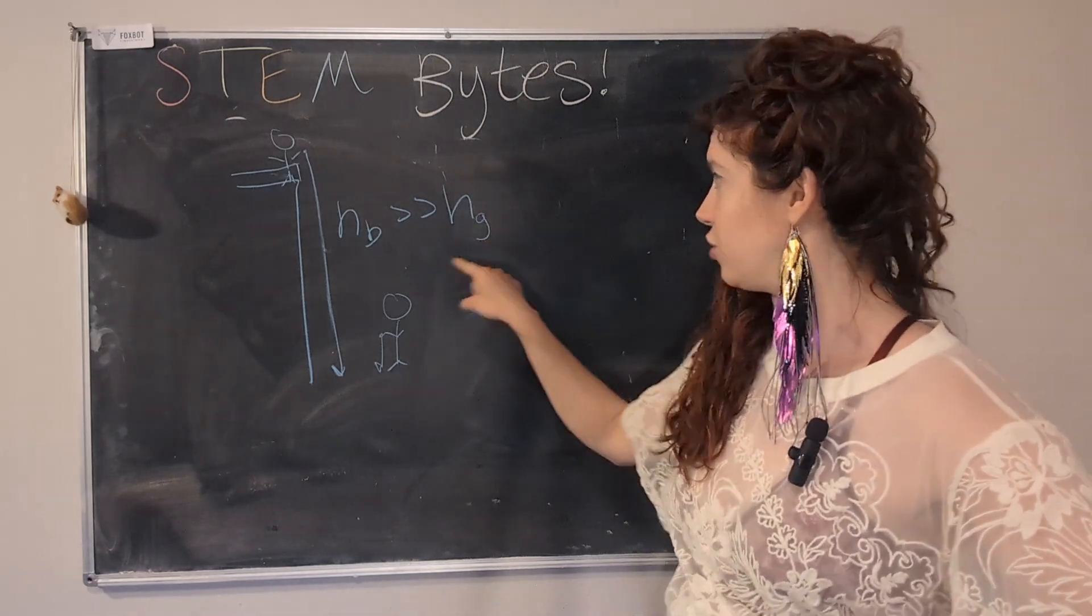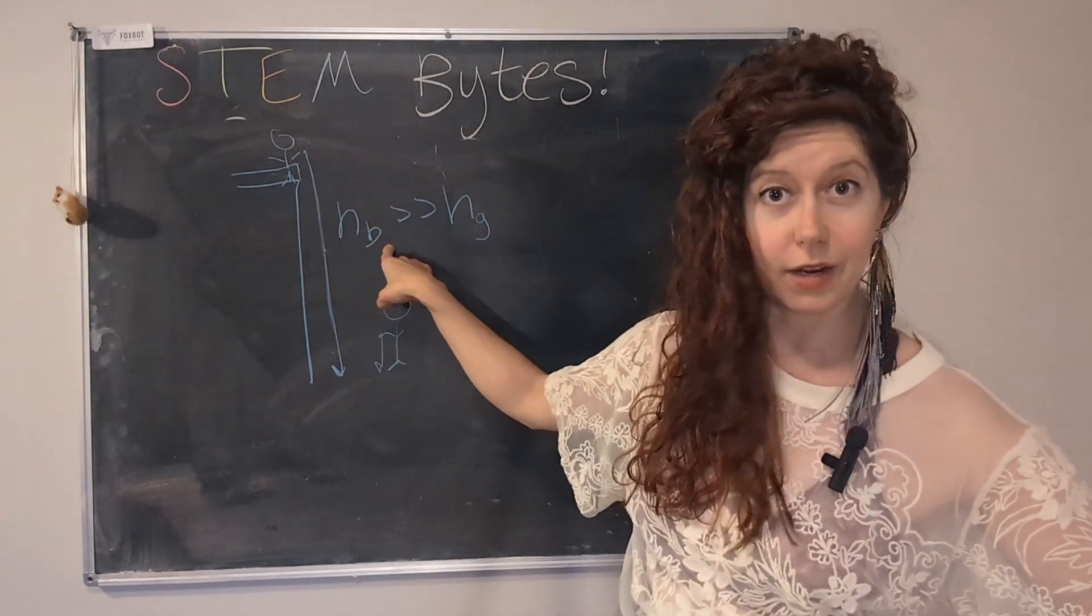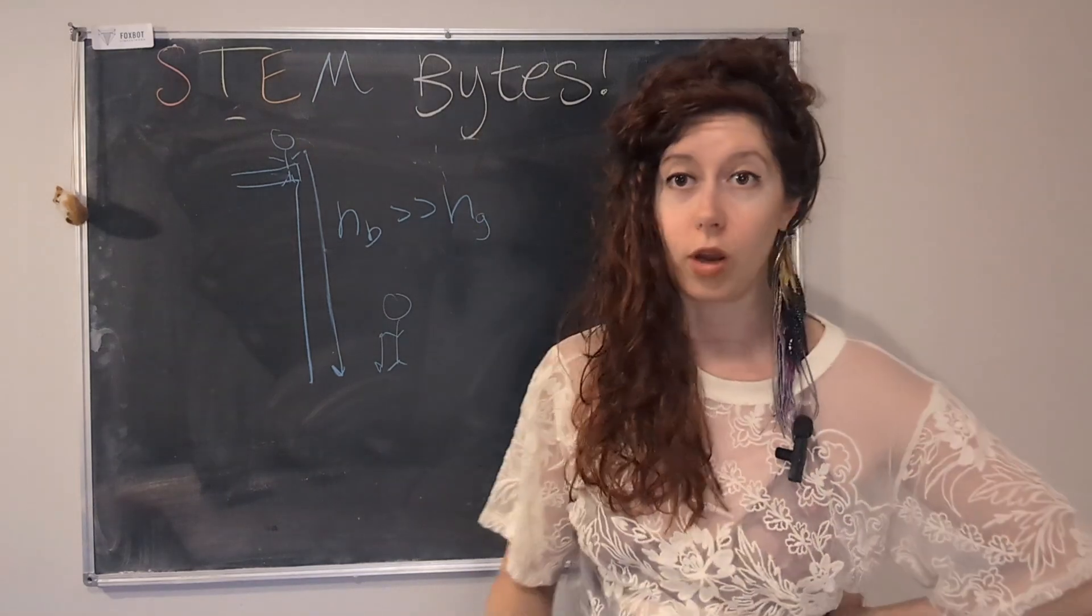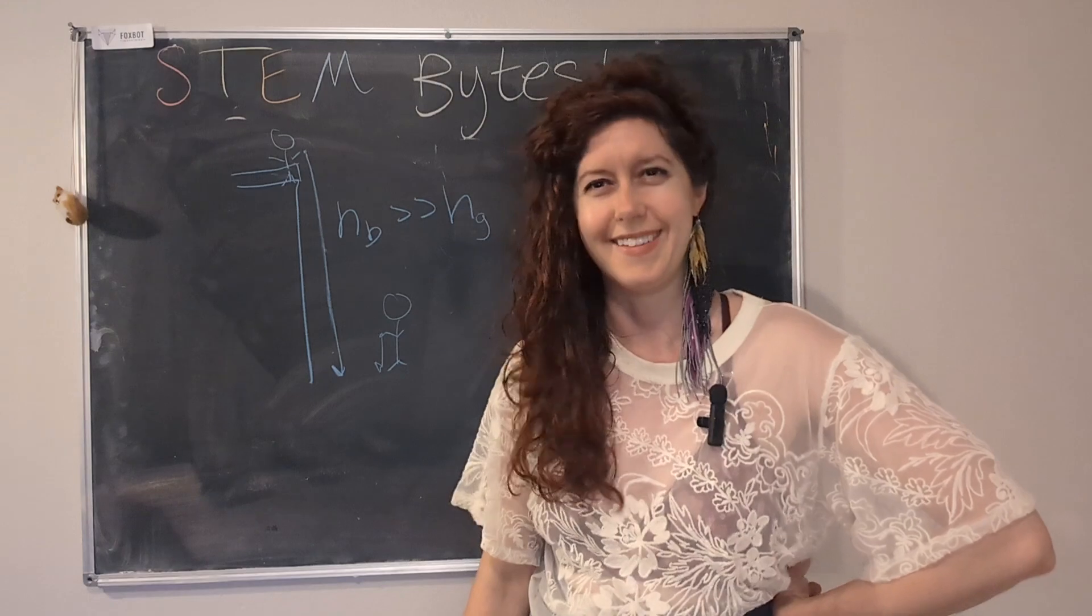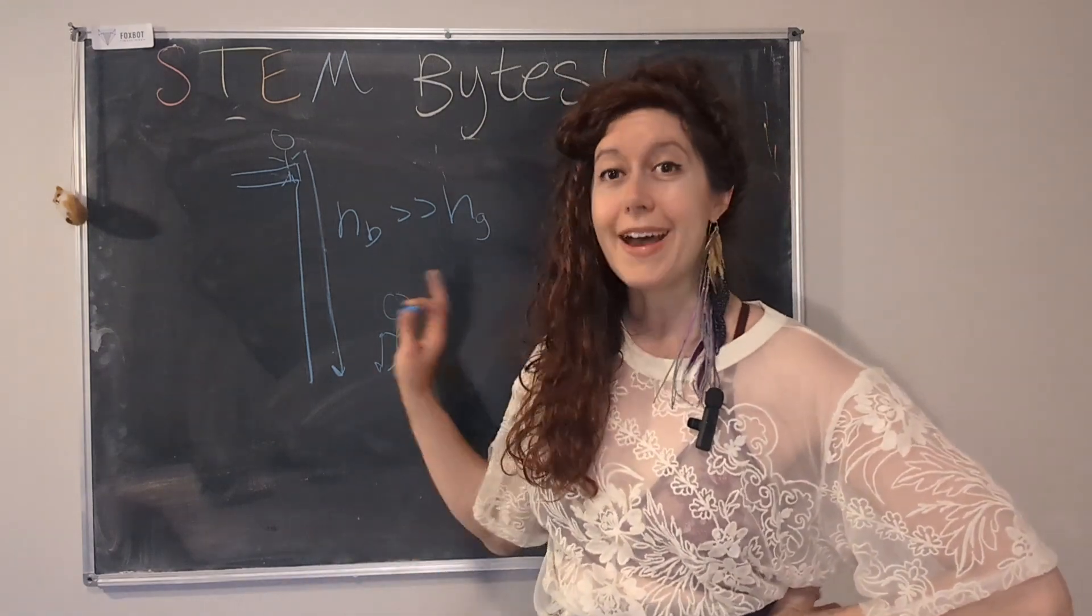We'll say h building for height of the building and h ground for height that you would drop it from if you were standing on the ground, like I am right now. Okay, so that is voltage.